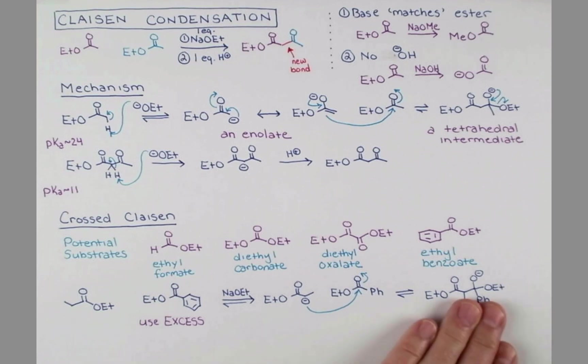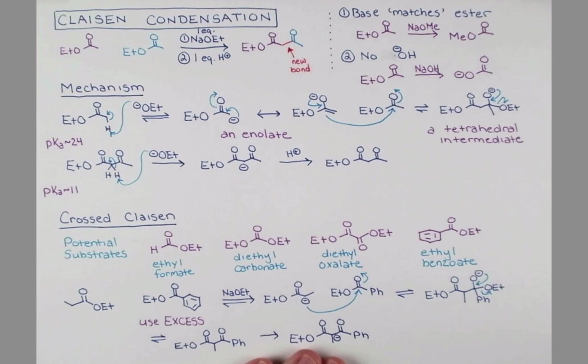We'll then kick out our leaving group, forming the dicarbonyl compound that gets deprotonated by the sodium ethoxide in solution. And so we carefully treat this compound with an equivalent of acid to reprotonate our enolate.